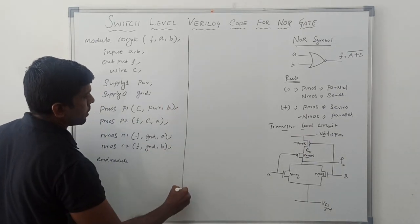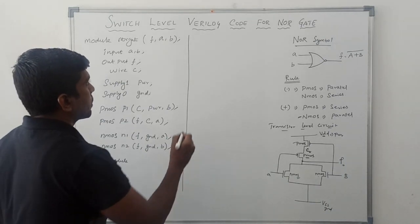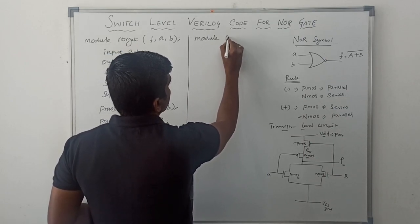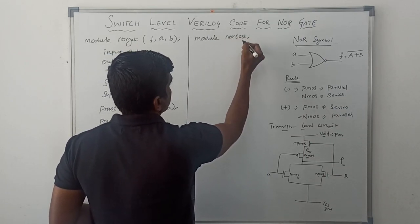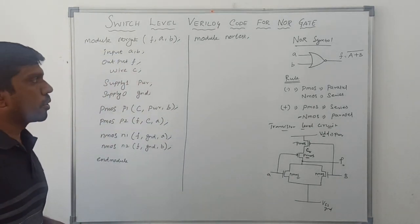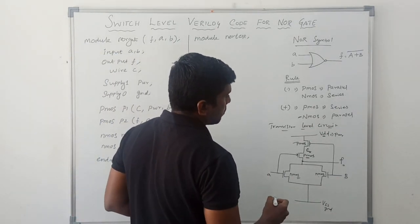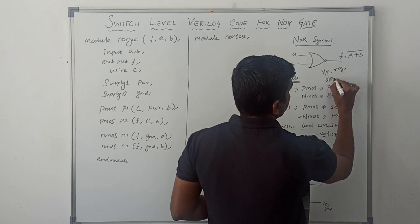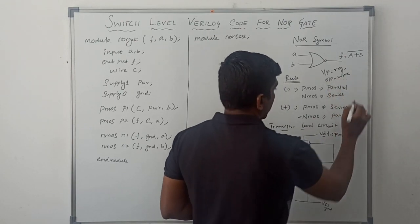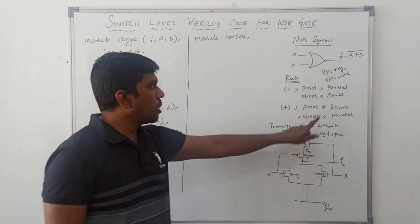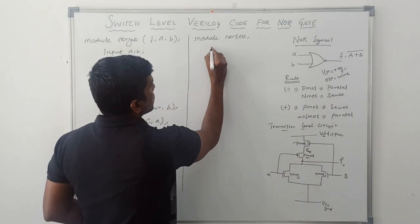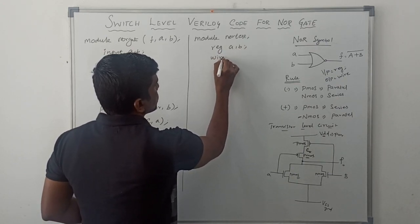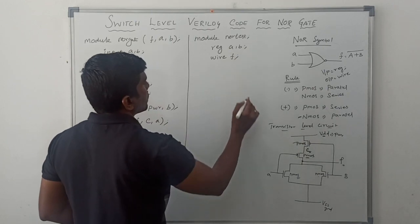Now I am going to write the testbench Verilog code for the same. First write module, then the module name is NOR_test. Then declaration of input and output variables. As I already mentioned, input variables are declared as reg and output variables are declared as wire. We have two input variables A and B, and output variable F: reg A, B; wire F.